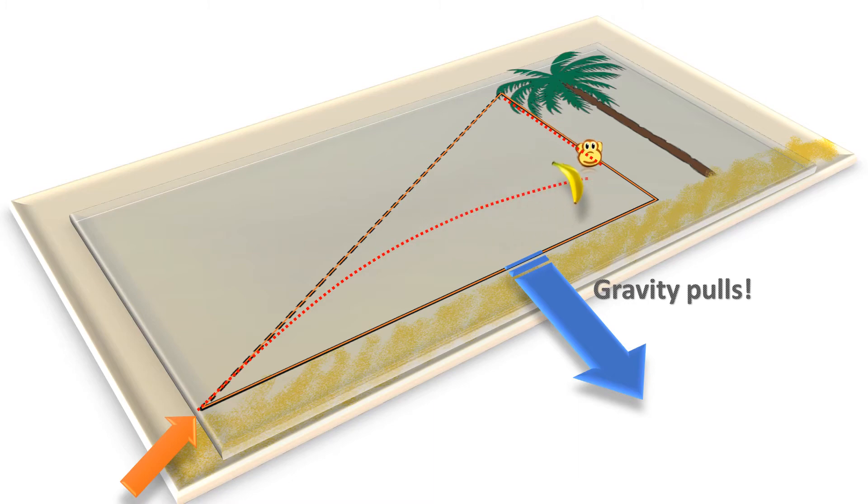Also, because of gravity, the banana will not fly along a straight line, but along a curve that we call a parabola. At the end, the banana will surely hit the monkey, precisely as it was aimed at the beginning.